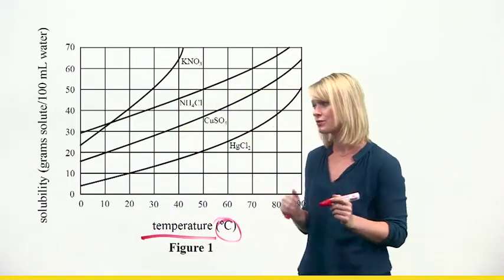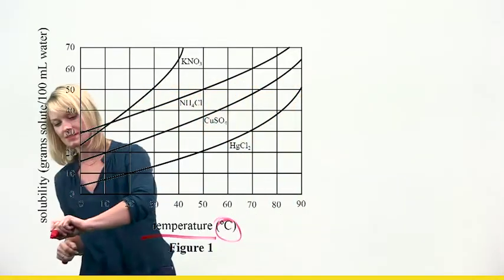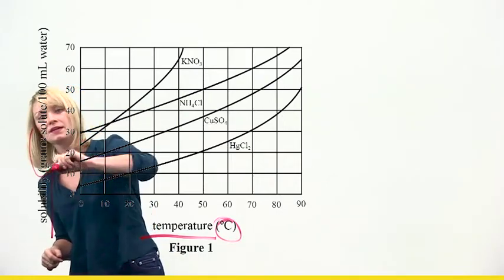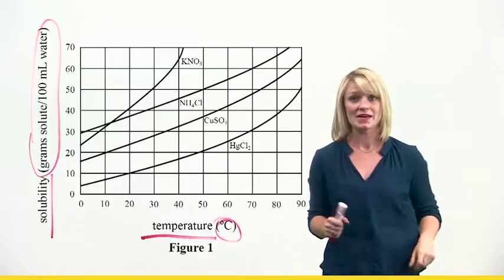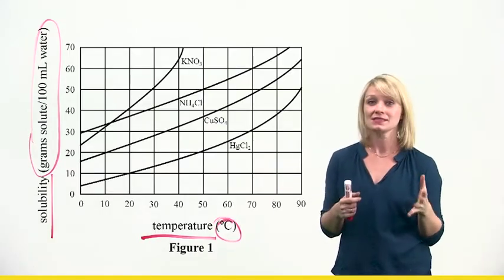We're measuring temperature in degrees Celsius versus solubility in grams of solute per 100 milliliters of water. These are the variables that the graph is dealing with.